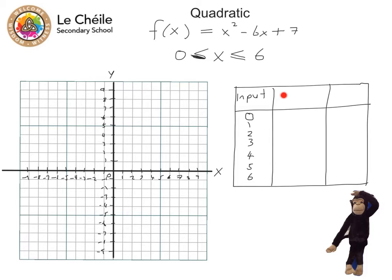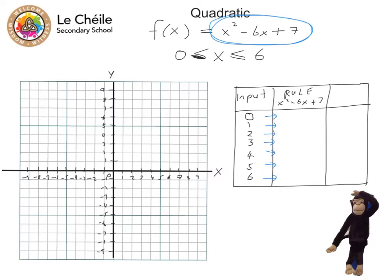Now in the middle of our input-output table, we put the rule. And the rule is what's here. This is the function. So the rule we'll say is x squared minus 6x plus 7. And we hope that by putting these numbers into the rule, we should end up with a new number. So all of these are going to go in to this rule.